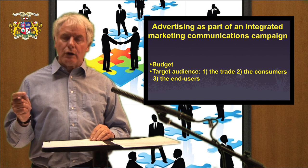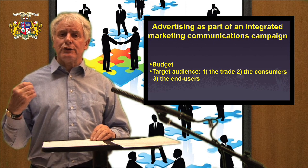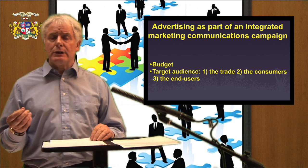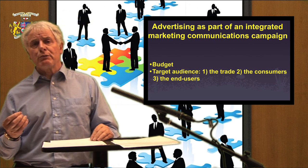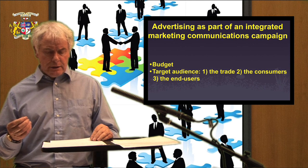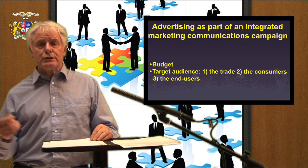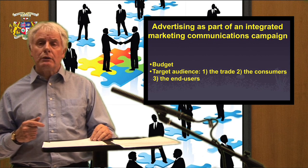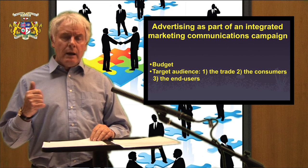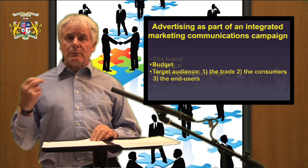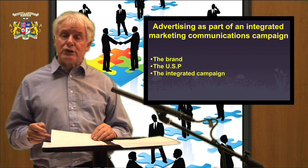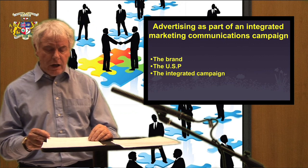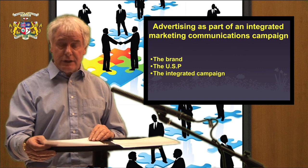Next, we need to consider the target audience. We need to communicate with the trade that we are going to be advertising heavily — this will interest the trade in stocking more of our product in advance of increased demand. Then we need to reach the consumers, the people who buy our product. For example: ABC Housewives — the more wealthy housewives — aged between 20 and 45, with children aged between 6 and 15.